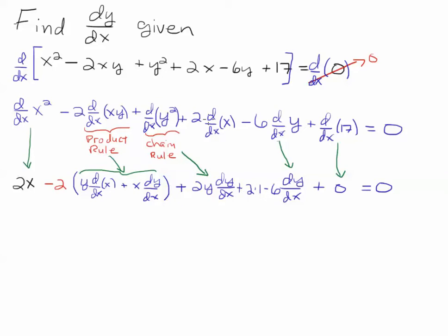Plus 2 times the derivative of x, which is simply 1, minus 6 times the derivative of y with respect to x, and the derivative of 17, which is the derivative of a constant, is simply 0.